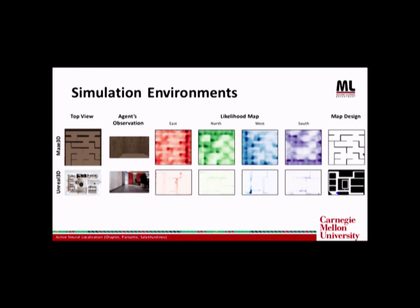So we use two simulation environments for our experiments. The first one is based on the Doom game engine. Here the agent is tested on very challenging mazes. The textures in these mazes are very similar. And we can control the difficulty of the maze by introducing landmarks or walls with unique texture. The second environment is based on the Unreal game engine. This allows us to test our agent in photorealistic simulation environments.